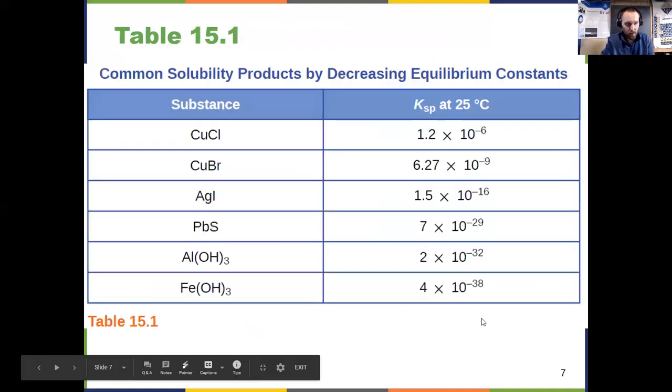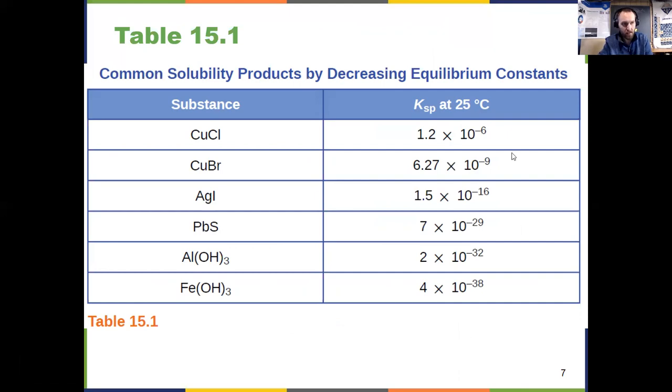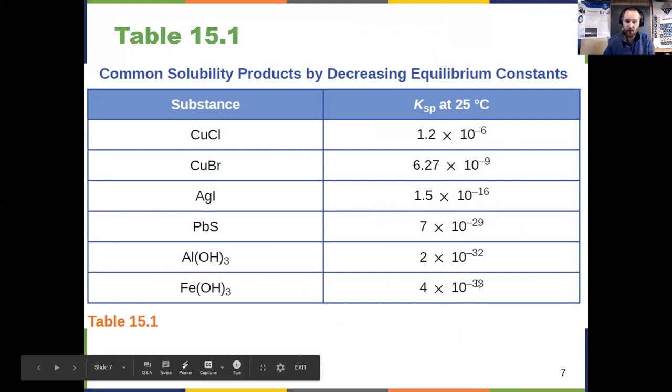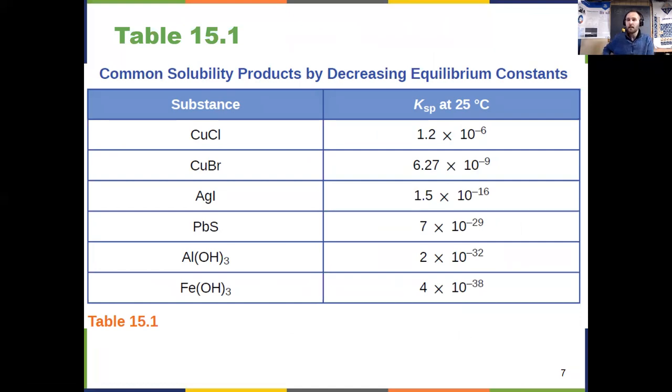Here are some examples of some solubility product constants. And these are always small values. Look at these things, 10 to the negative 6 to 10 to the negative 38. These are always really small values, always less than one, because we are, by definition in Chapter 15, dealing with things that are sparingly soluble. They only dissolve a little bit. So we always have tiny equilibrium constants. We're always thinking about situations where the equilibrium lies to the left towards the reactants, towards the solids.